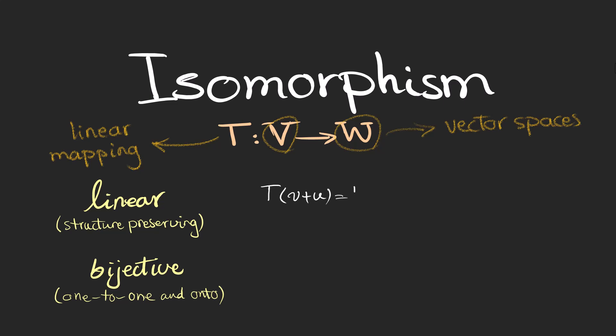More formally, when we say it preserves the structure, first it means that if we map two vectors to the new vector space and add them, we will get the same result as mapping the addition of the two vectors so the addition structure stays the same.